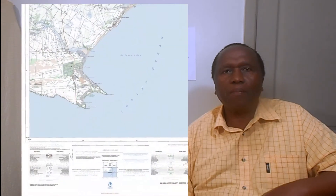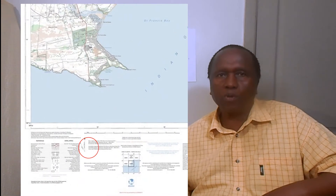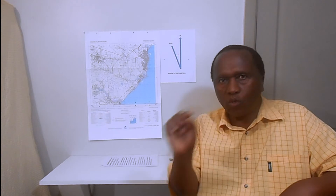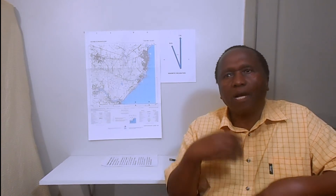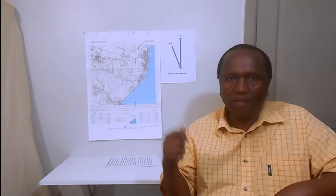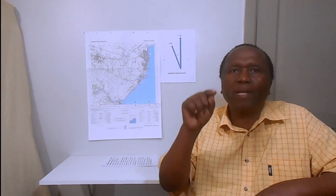Magnetic declination you will find at the bottom of the map, sometimes it will be on the side. A simple definition of magnetic declination: it is the angular distance between the magnetic north and the true north. In the paper, examiners would usually ask a question like: calculate the magnetic declination of a map in a particular year.